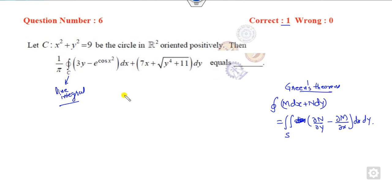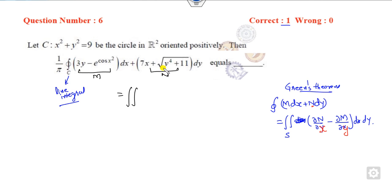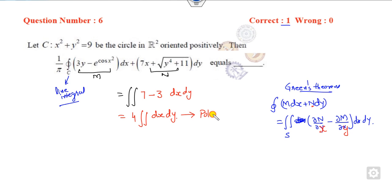What you can do is simply find the partial derivatives. Comparing the expression, M is the coefficient of dx and N is the coefficient of dy. You can find the partial derivative of N with respect to x and M with respect to y. Since N is already in y, the partial derivative of N with respect to x is 7, and the partial derivative of M with respect to y is 3, giving a constant 4 over the surface, so 4 dx dy.